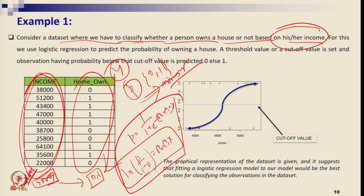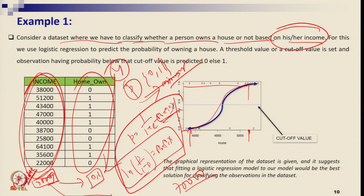From this existing sample data, we fit the logistic regression model by calculating the coefficients. We plot the sigmoid function with probability on the left vertical axis. For a new candidate with income of say 30,000, it falls in a region where the probability is low, suggesting the person may not own a home. But if the income is 70,000, the probability rises above the cutoff point of 0.5.